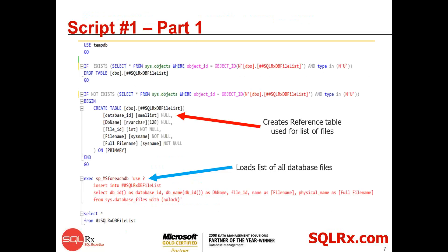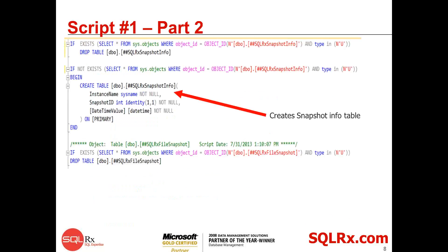Script one is the one that actually records exactly what is out there in the system. It creates a reference table first and then loads all the database files. I'm using the sys.databases even though it's not officially supported — it was simply the easiest way, particularly for an example environment. On the select, there's nothing more than to verify it's all gone in. The second table contains information regarding the snapshot itself: what instance it is, the snapshot ID, and the date and time it was taken. This allows us to compare and know how long it's been since the first sample or the adjacent sample.